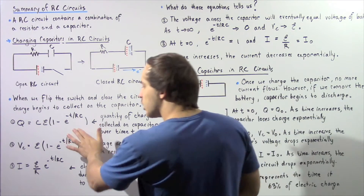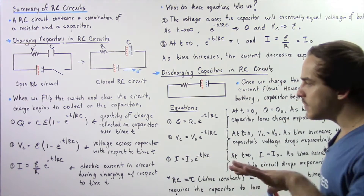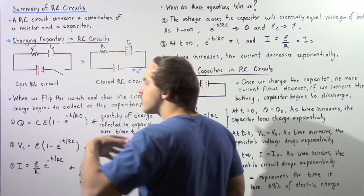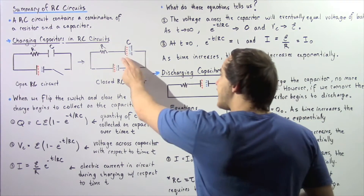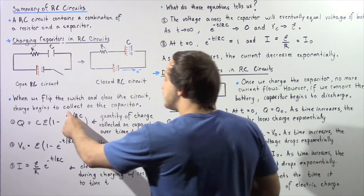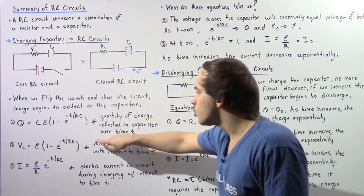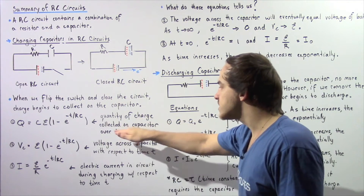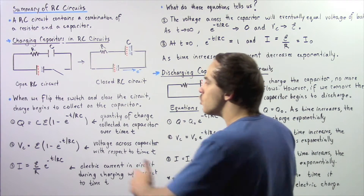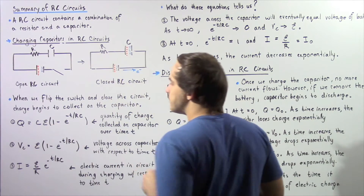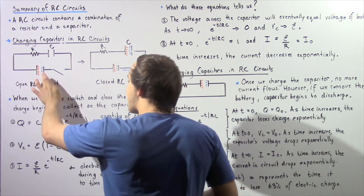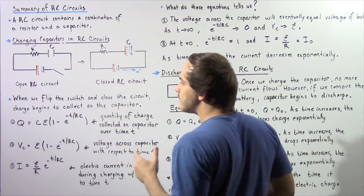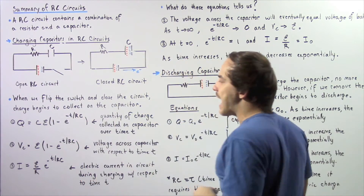Let's examine three important equations derived in a previous lecture. Equation one gives us Q, the quantity of charge that accumulates on our capacitor over time T during the charging process. Q is equal to C multiplied by the electromotive force E, times the quantity in parentheses, where C is capacitance, T is time in seconds, and R is resistance.